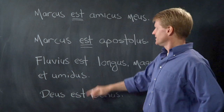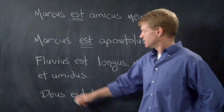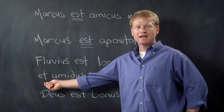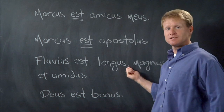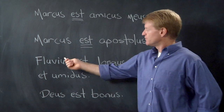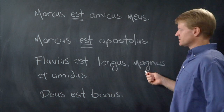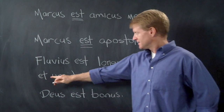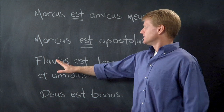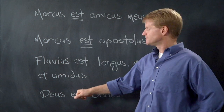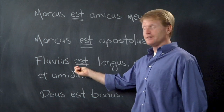Fluvius est longus magnus et humidus. I don't know if we've had that word — et means 'and.' And you know what? The Romans didn't even have commas, so I should have written: Fluvius est longus et magnus et humidus. That's how I should have written it. Fluvius means 'river.' Est — there it is again. What does est mean? Is.